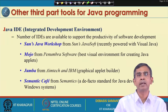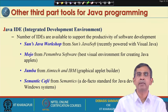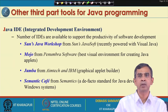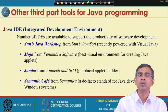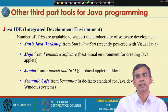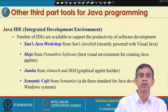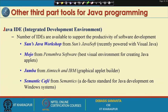There are also sophisticated programming environments available in the market, though they are not free — they are costly. These are called IDEs — Integrated Development Environments. From Sun Microsystems itself, one IDE is available called Sun's Java Workshop, for commercial purposes. Mojo from Penumbra Software is suitable for creating Java applets. Jumba from Amtech and IBM is also suitable for Java applet programming. The best I have ever seen is called Semantic Cafe.